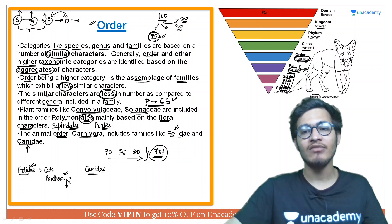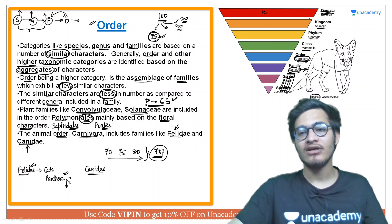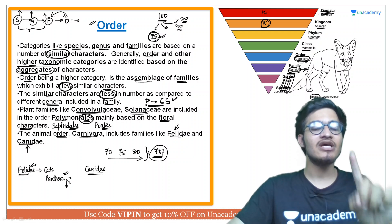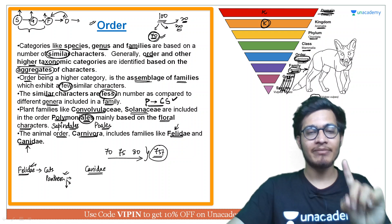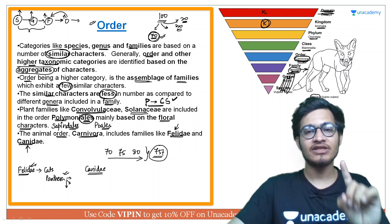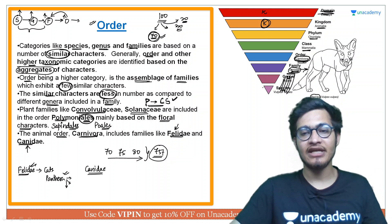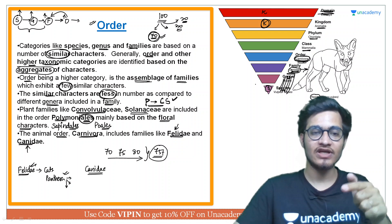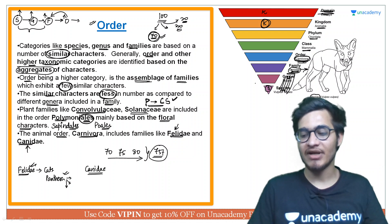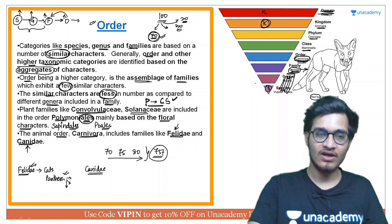Starting from kingdom — which is the highest obligate category — all the way down to species, you can assemble the complete taxonomic hierarchy in this way.